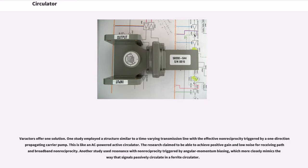Varactors offer one solution. One study employed a structure similar to a time-varying transmission line with the effect of non-reciprocity triggered by a one-direction propagating carrier pump. This is like an AC-powered active circulator. The research claimed to be able to achieve positive gain and low noise for receiving path and broadband non-reciprocity. Another study used resonance with non-reciprocity triggered by angular momentum biasing, which more closely mimics the way that signals passively circulate in a ferrite circulator.